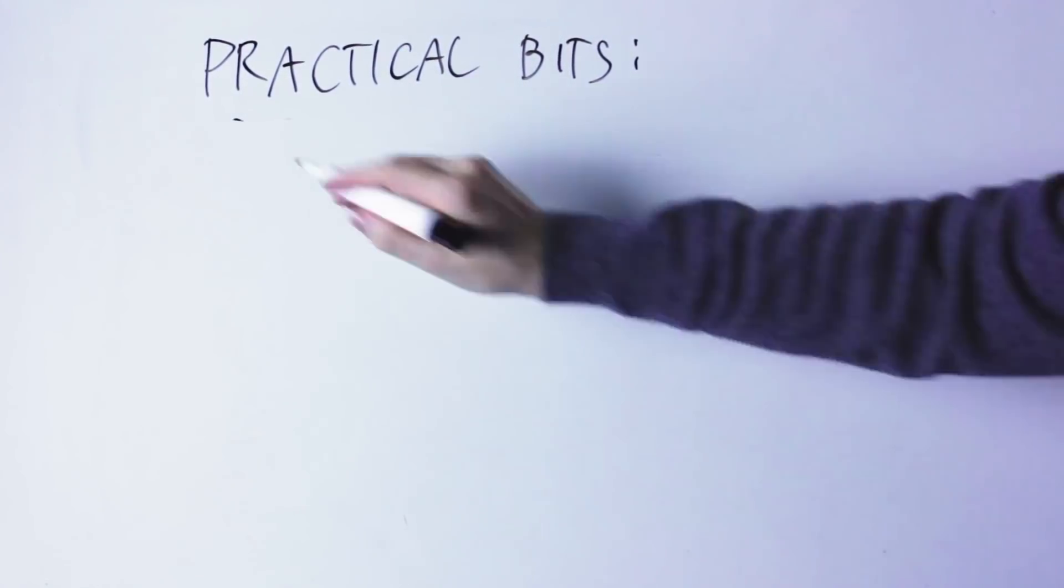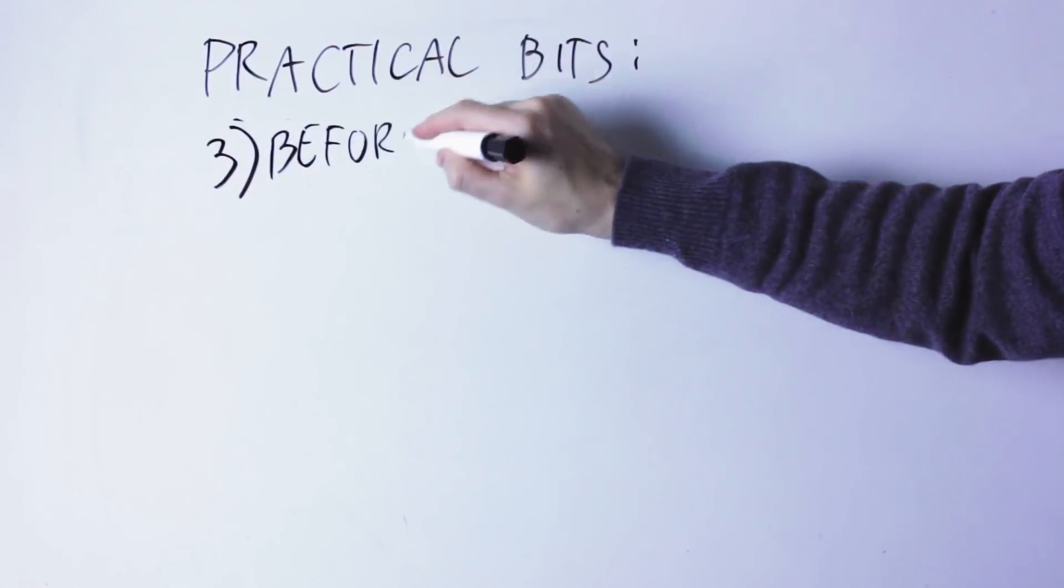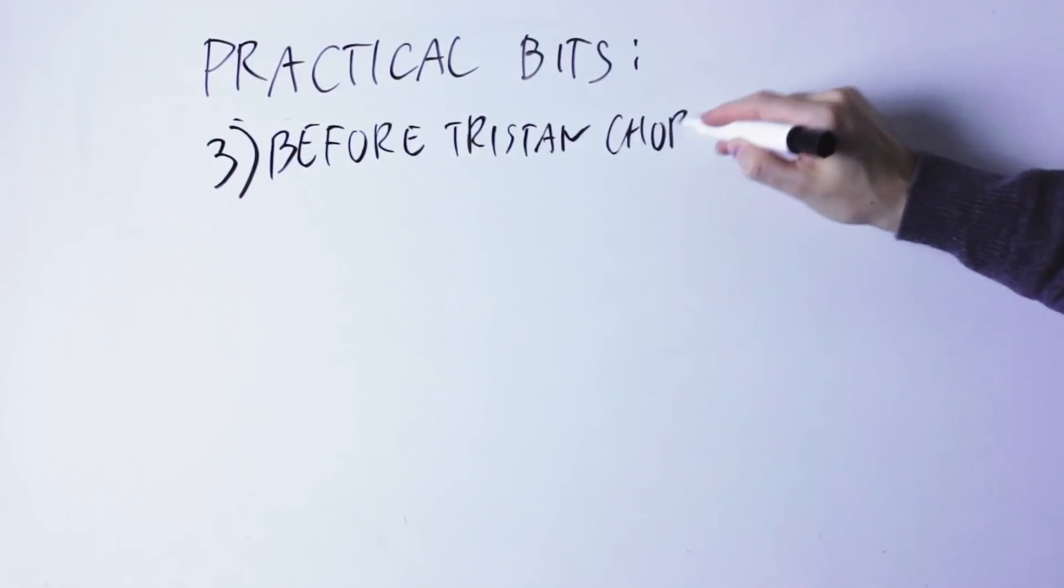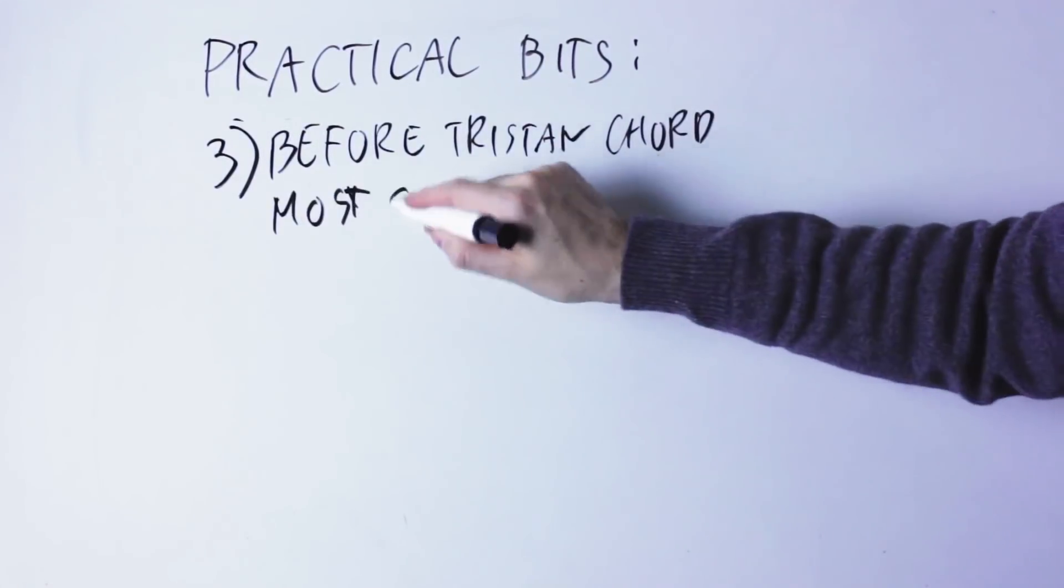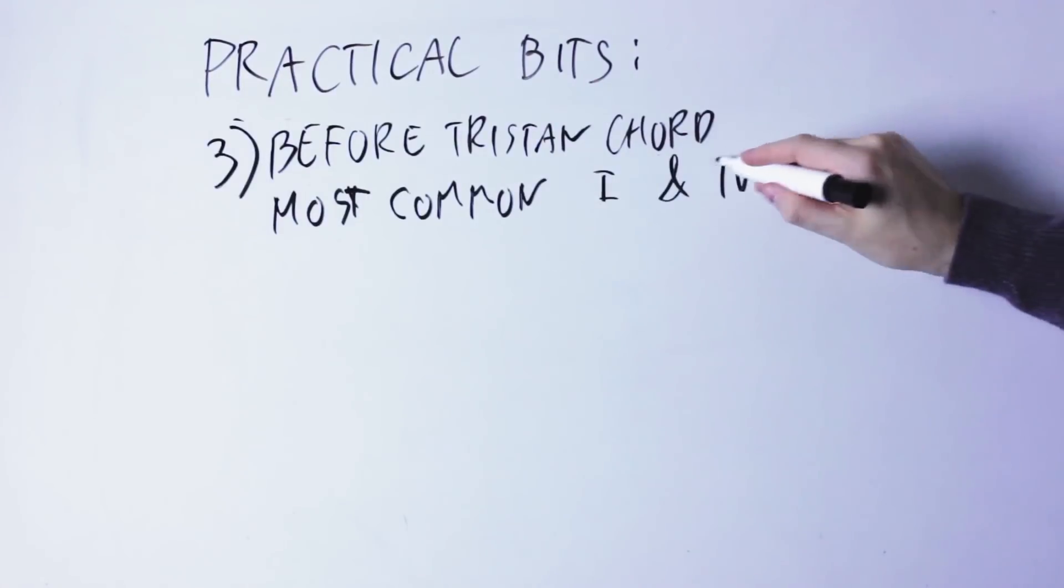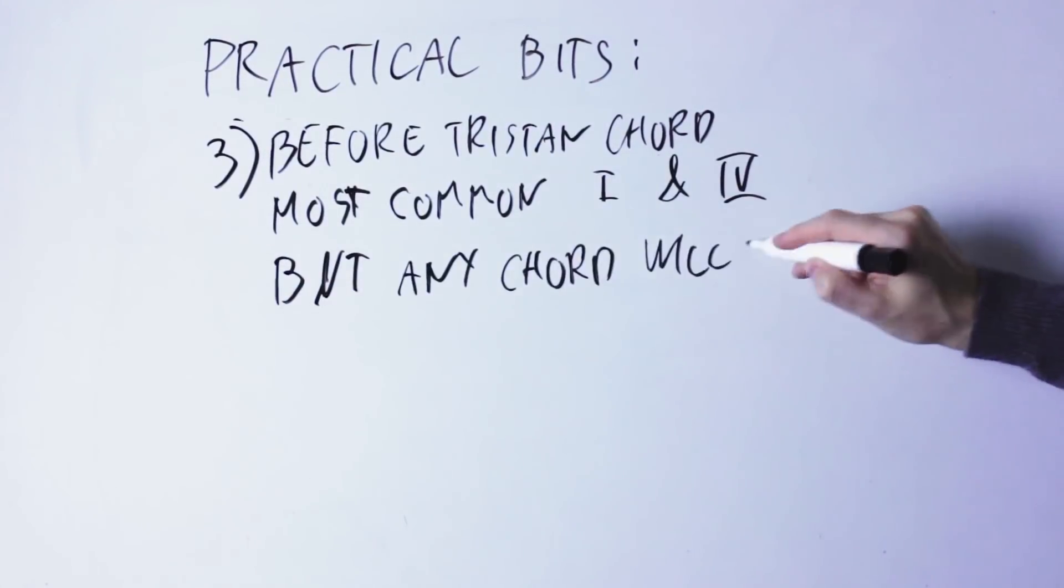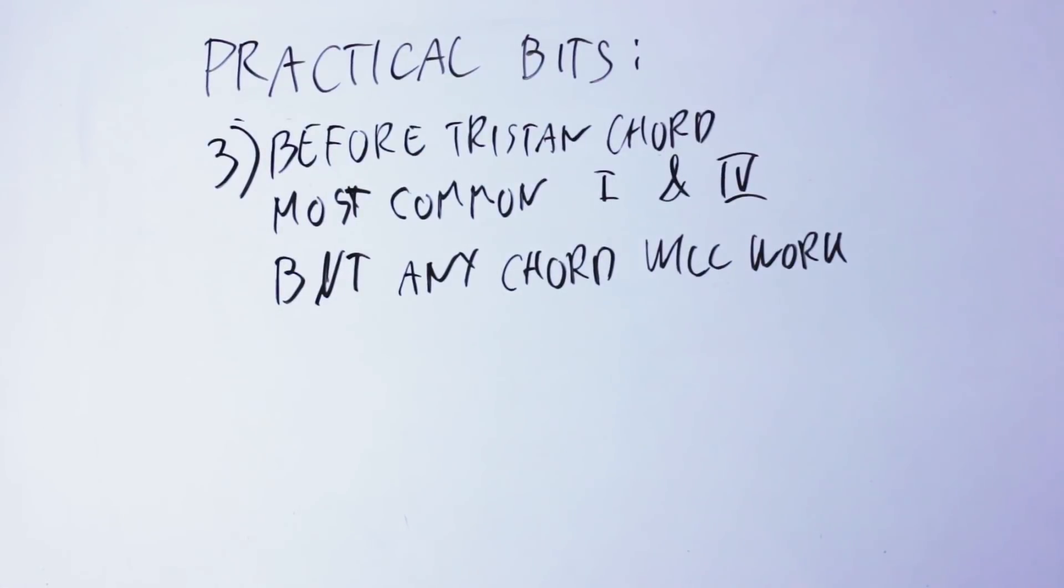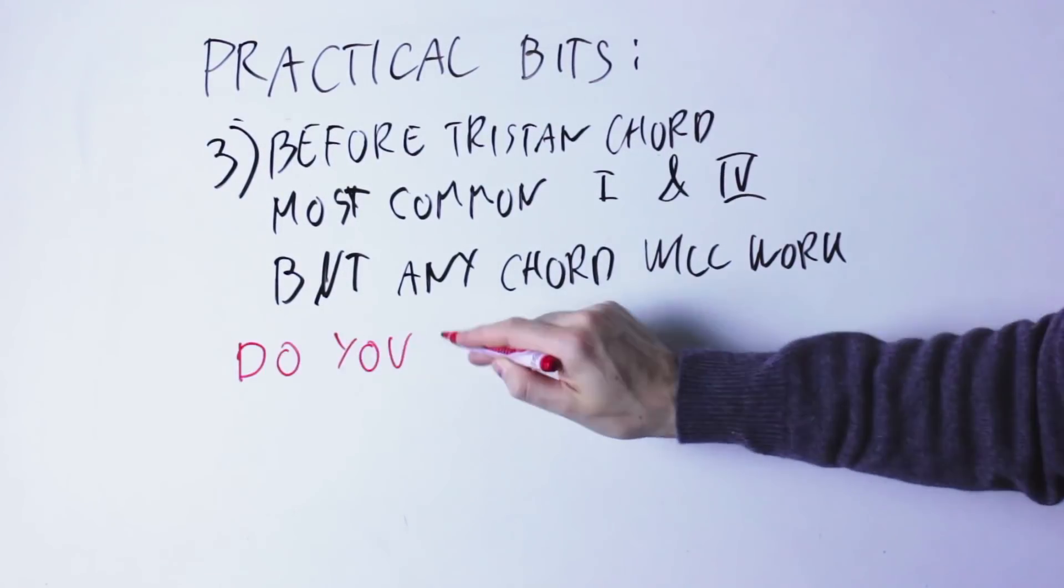This is how you resolve the Tristan chord, but what do you put before that? Well, the best chords to put before the Tristan chord are the first chord of the key, in this case A minor, or the fourth chord of the key, in this case D minor, but it works really well with nearly any other chord before it.